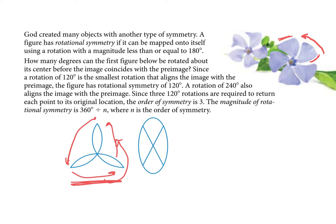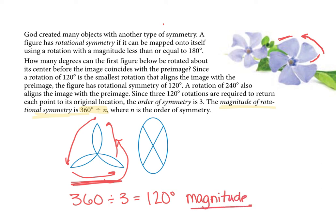How many degrees do I move to rotate it onto itself once? A full rotation is 360 degrees. We said it could be rotated 3 times, so 360 divided by 3 is 120 degrees. This is called the magnitude — how many degrees it takes to rotate once and get it back to where it needs to be. N is the order of symmetry — how many times you can rotate it before returning to the start.